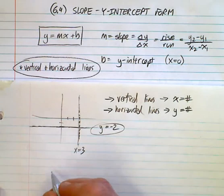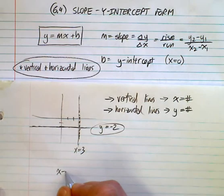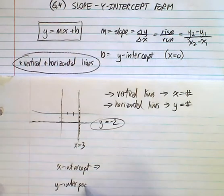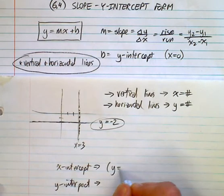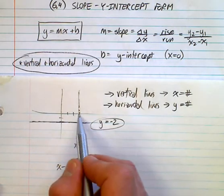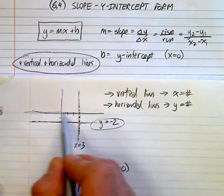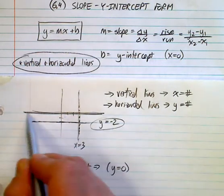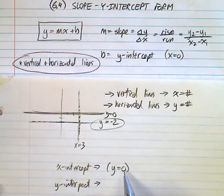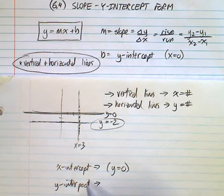The other thing I wanted to remind you of quickly was the x-intercept and the y-intercept. These are very important points. The x-intercept is where y equals 0. The x-intercept is somewhere along here where it crosses the x-axis — a horizontal line where y is equal to 0.